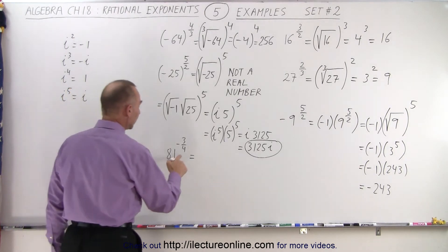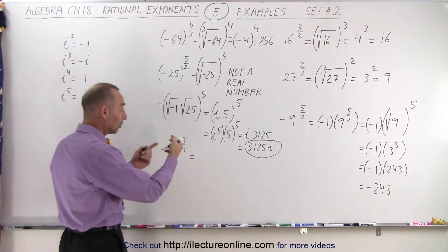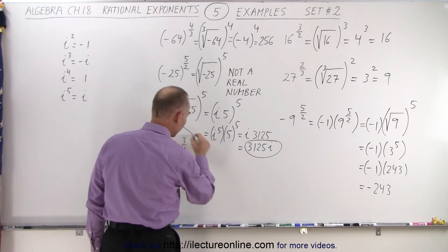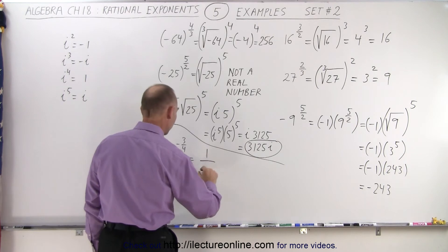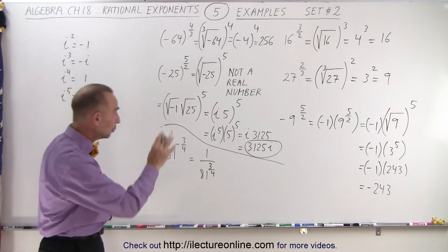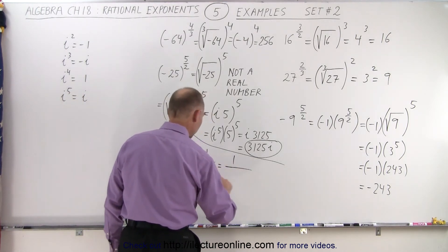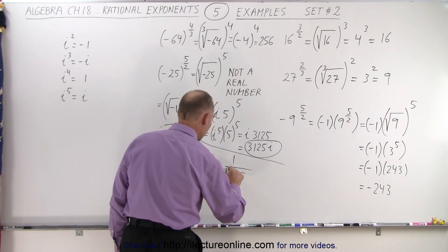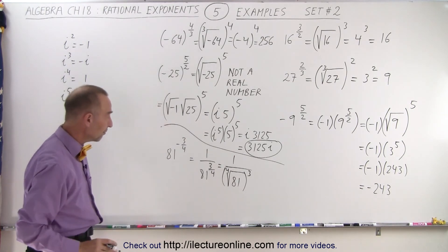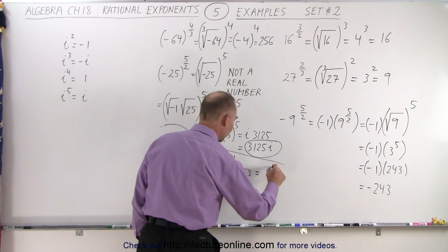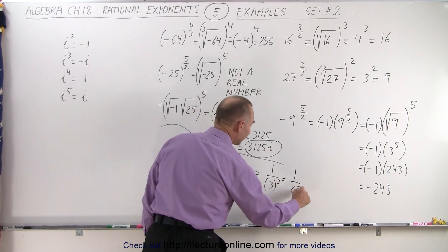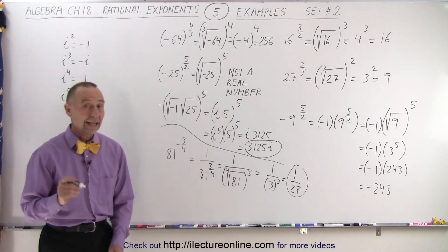Finally, 81 to the minus three-quarters power. Remember the rule: we bring it to the denominator and write it as a positive exponent. So this can be written as 1 over 81 to the positive three-fourths power. Then we work out the denominator normally: this is 1 over the fourth root of 81, the whole thing raised to the third power. The fourth root of 81 is 3, so that's 1 over 3 to the third power, which equals 1 over 27. And that is how it's done.